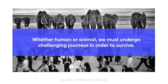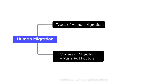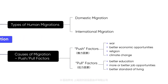Now let's quickly review what we've learned today. In the first part, we talked about the migration of the Arctic tern, salmon, and wildebeests. As for part two, human migrations, there are two types: domestic migration and international migration. Both types can be attributed to two factors — push factors and pull factors. War and religion are examples of push factors, while better education and better standard of living are considered pull factors.